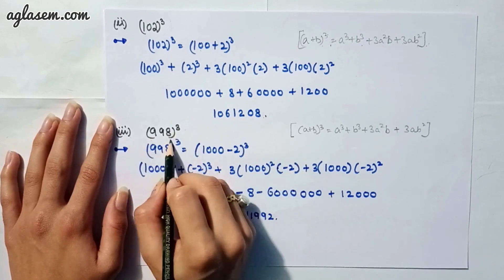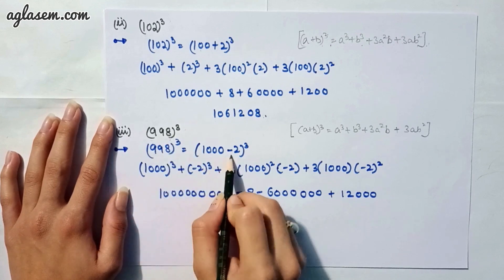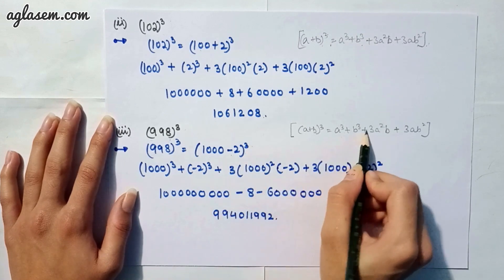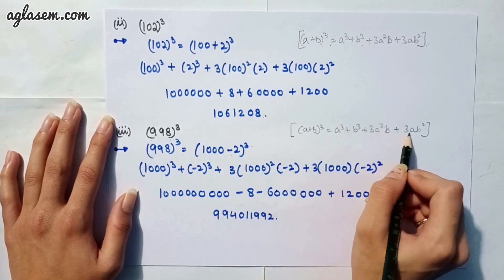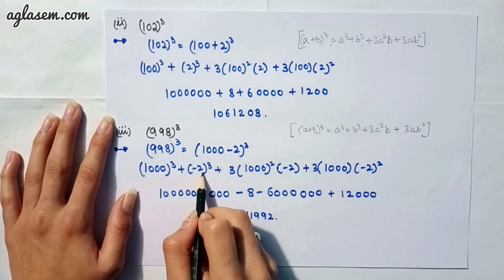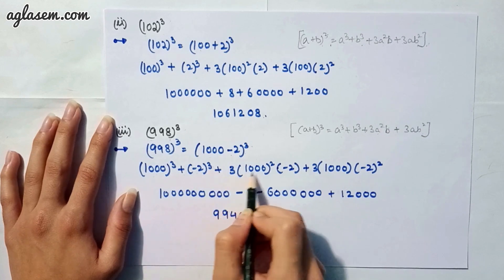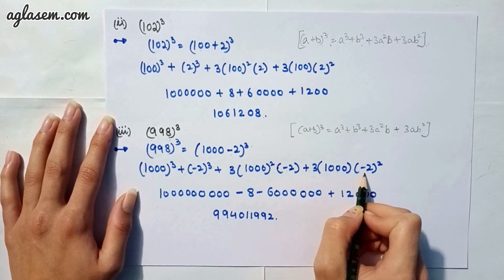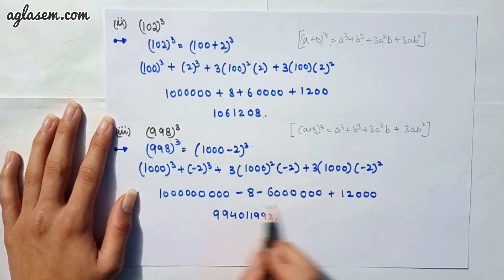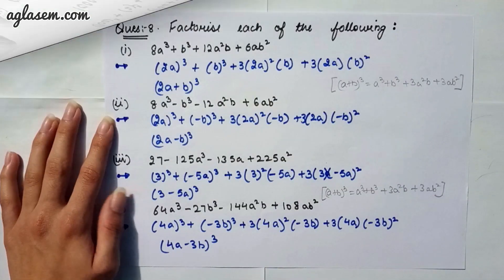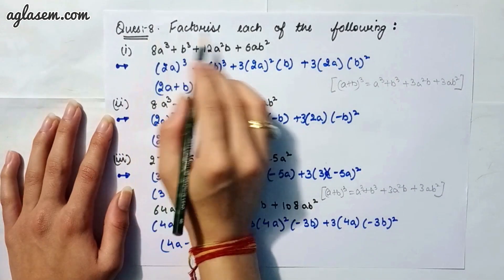Moving to our third part: 998³. We write 998 as (1000 − 2)³. Applying the same formula (a + b)³ = a³ + b³ + 3a²b + 3ab², we expand as 1000³ + (−2)³ + 3×1000²×(−2) + 3×1000×(−2)², giving the answer 994,011,992.